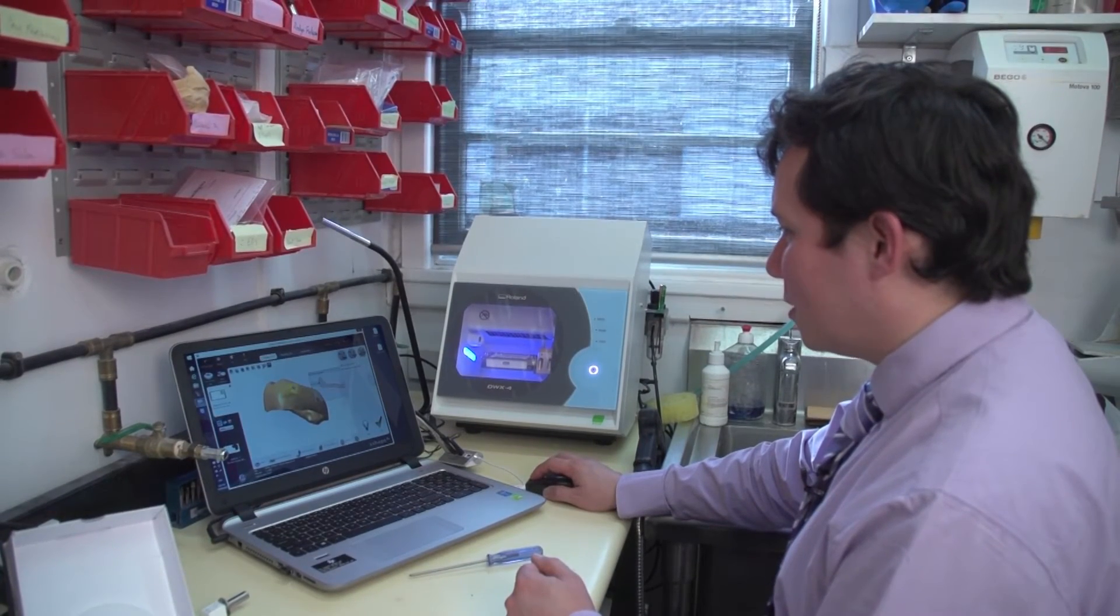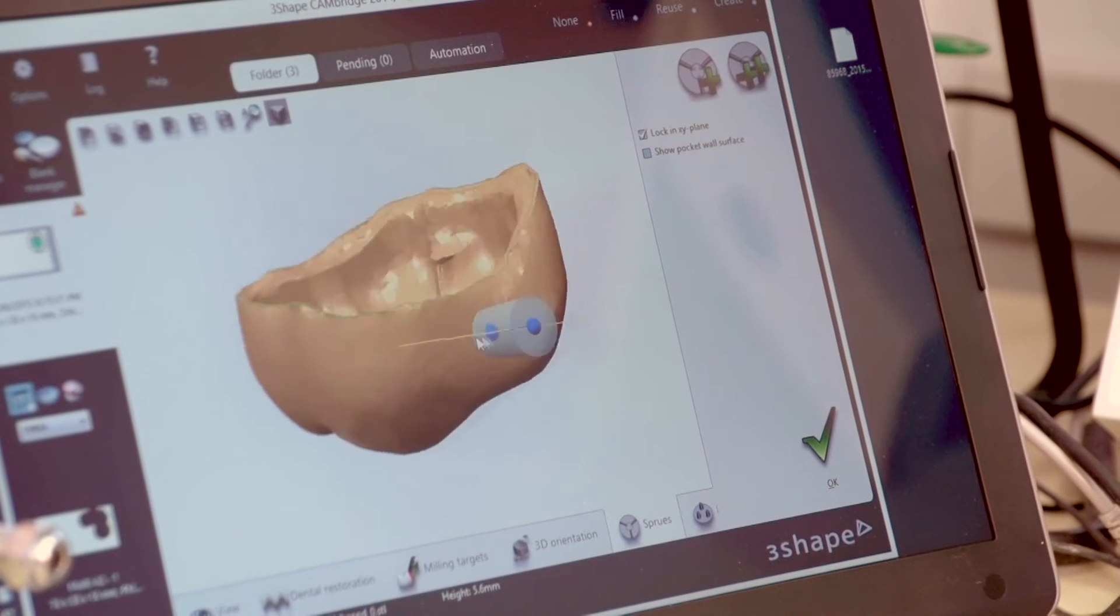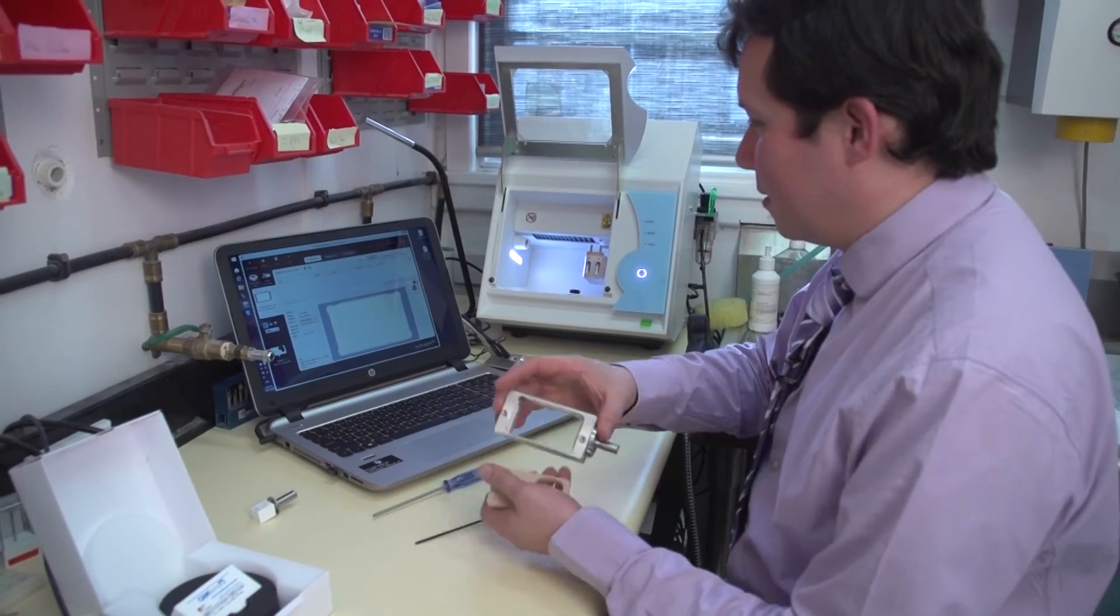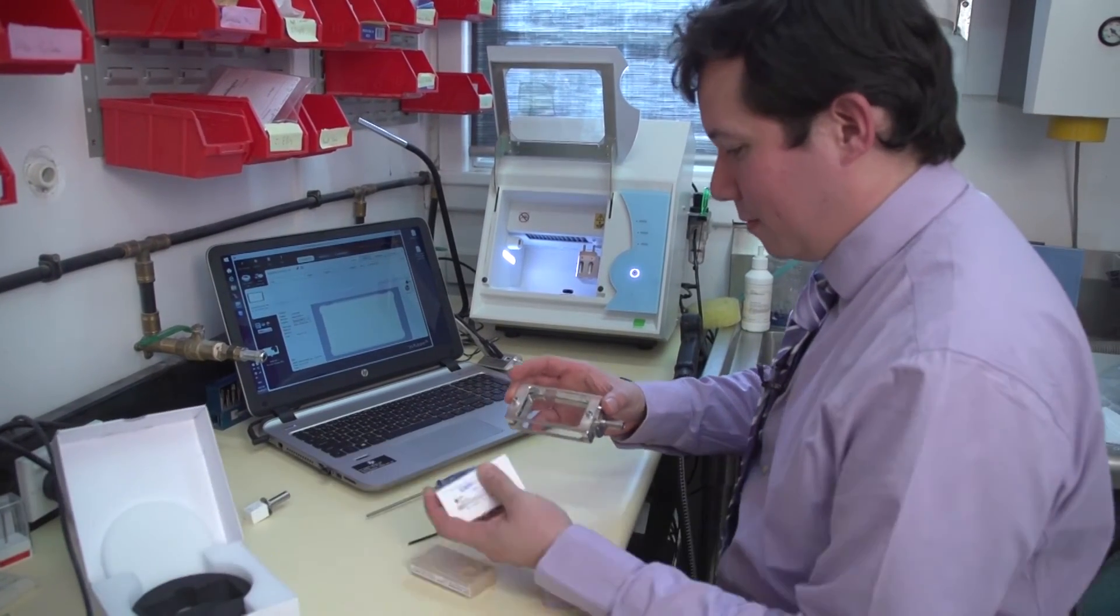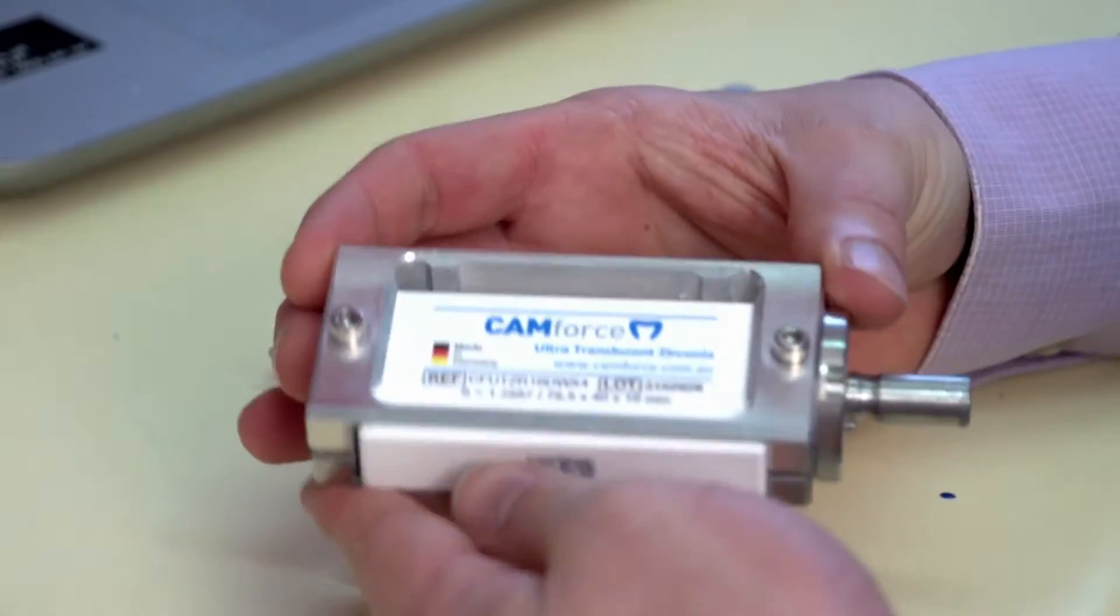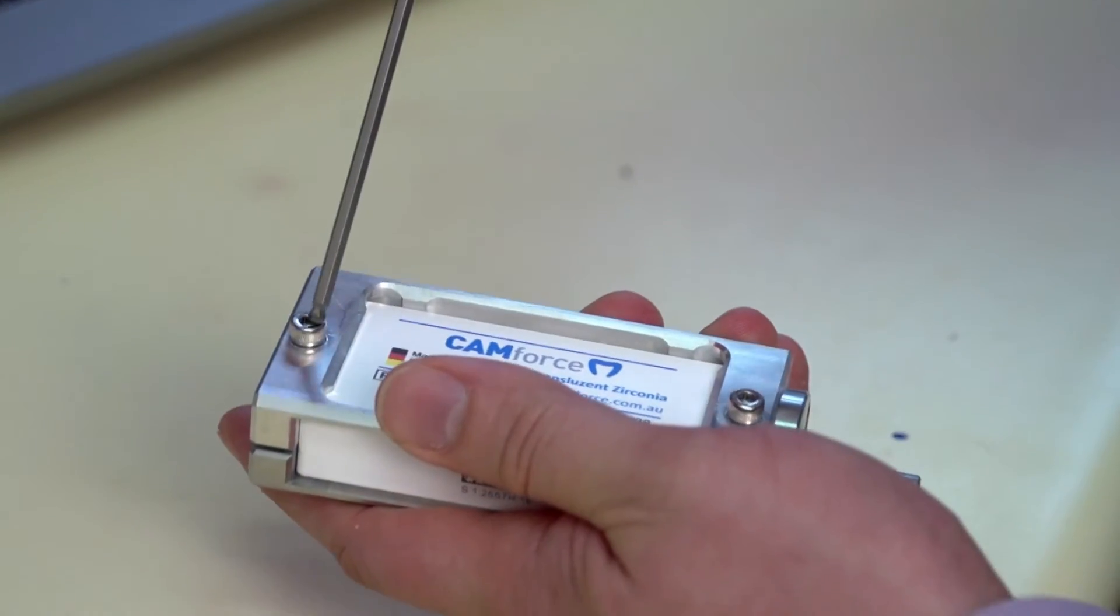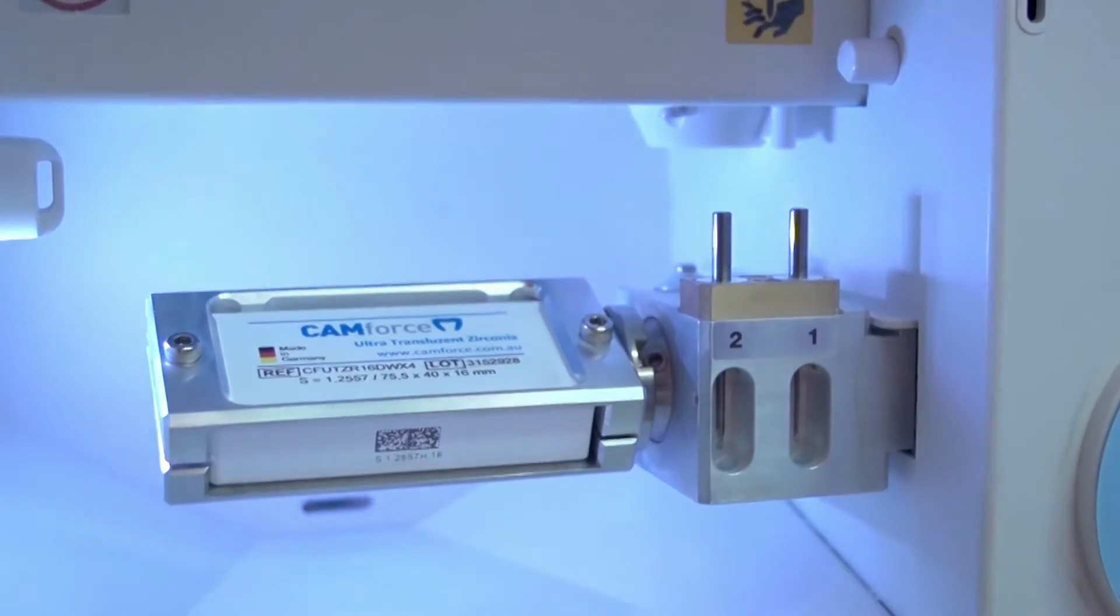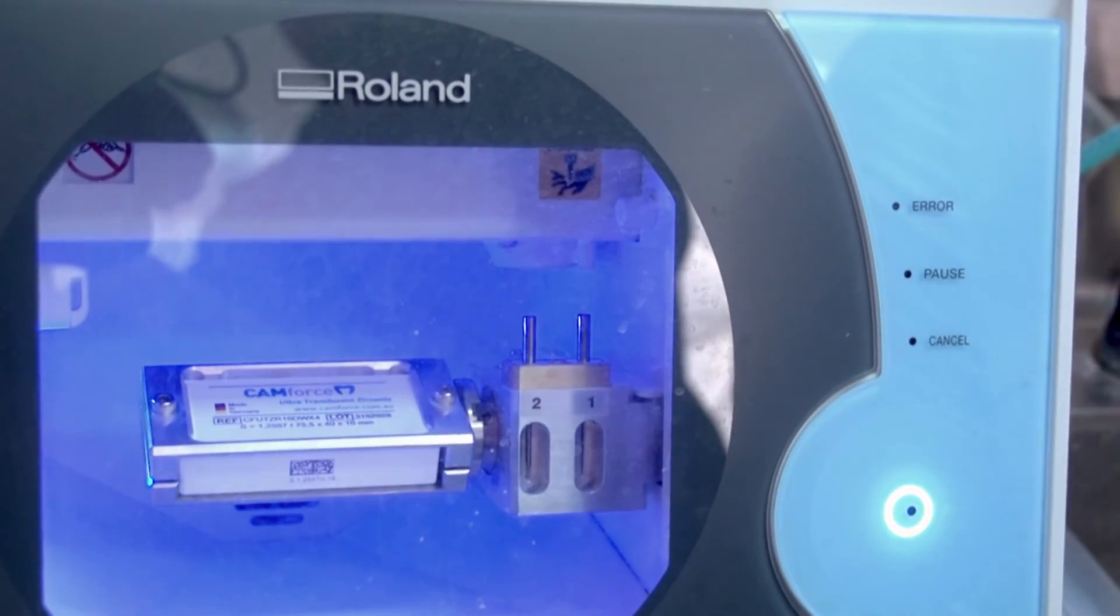A typical week would involve the milling of about 20 restorations on the DWX4 which include wax crowns for pressing, milling beta dynamic for single tooth restorations on the same day, milling full contours of zirconia crowns. And the reason why I choose to do that in-house is so that I can design the restoration to the shape and the engineering principles that I think are important before sending it out for sintering and colouring.